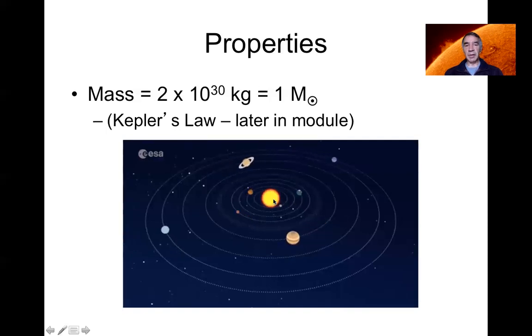So obviously this was worked out several centuries ago now in terms of Johannes Kepler, who worked out the laws that govern the motion of the planets around the Sun. And later Isaac Newton came along with his law of gravity, which allowed basically the combination of those two things to really tell you the mass of the Sun. So we will deal with Kepler's law later in the module when we look at measuring the mass of other stars.